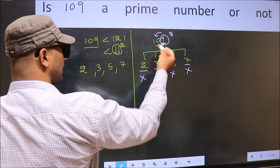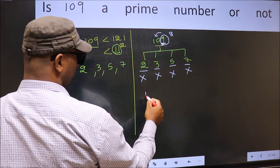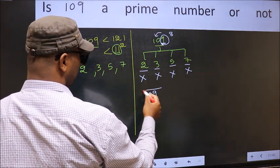So 109 is not divisible by any of these numbers. Hence, 109 is a prime number.